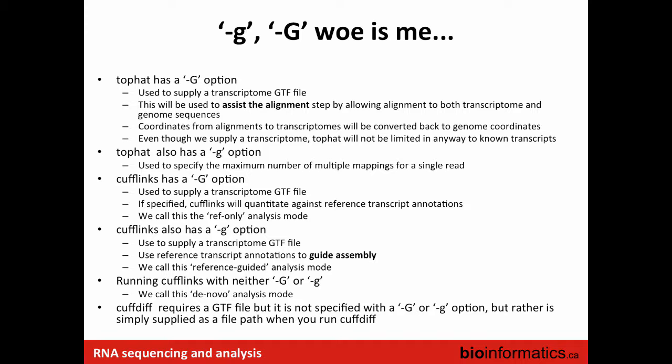The G options can get confusing. TopHat had a -G option where we specified a transcriptome GTF — that's unrelated to what we're discussing here. When we told the aligner about transcripts, we gave TopHat a heads-up to align against known transcripts as well as the reference genome, but it wasn't trying to predict transcripts or estimate abundance — it's purely used for deciding where to place each read. TopHat also has a lowercase -g option to specify the maximum number of multiple mappings for a single read.